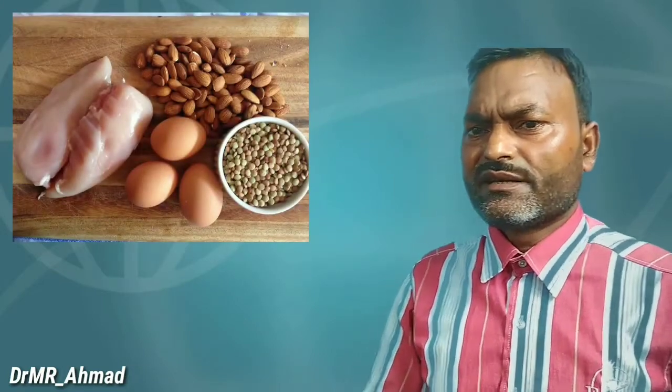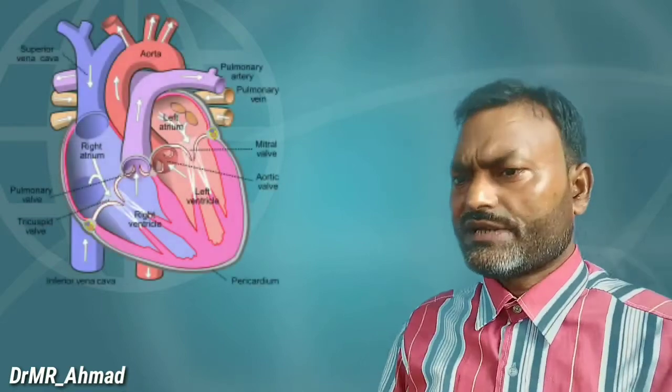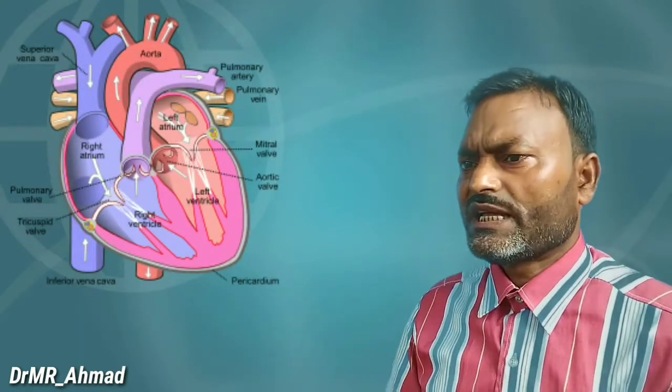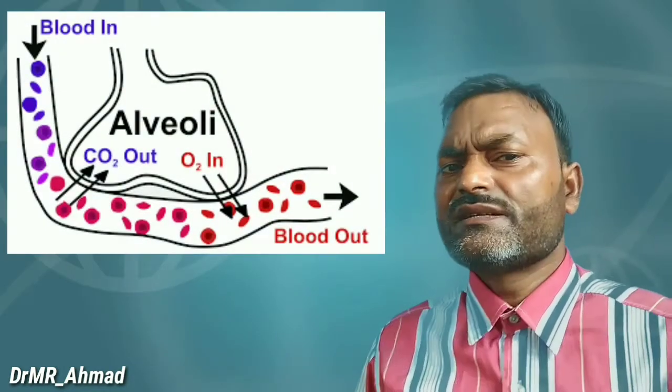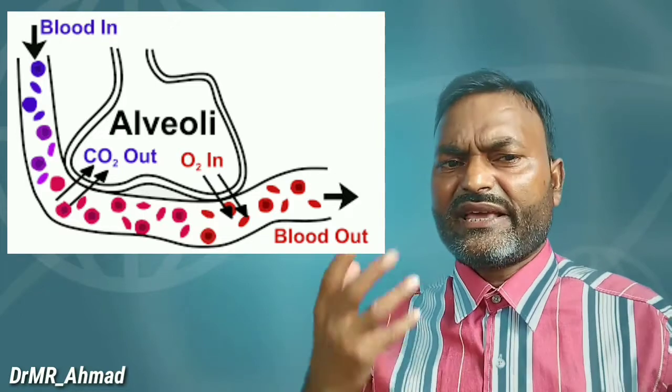Mulder in 1839 proposed the name protein. Strasnius in 1852 experimented on the heart. Bernard in 1859 demonstrated the formation of glycogen by the liver. And Ludwig in 1872 described the gaseous exchange of blood. Pasteur in 1876 discovered the Pasteur effect.